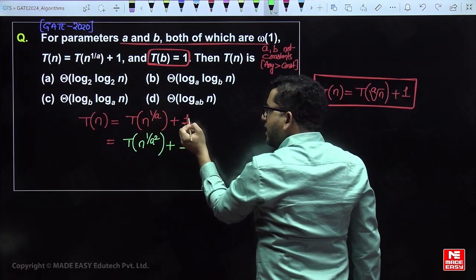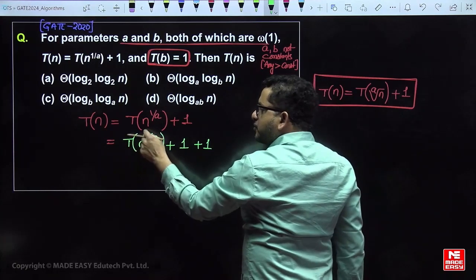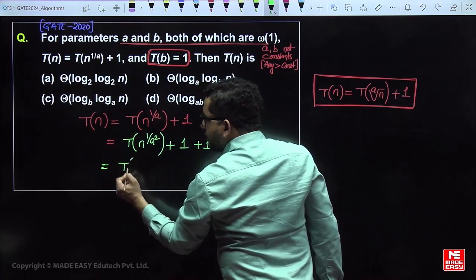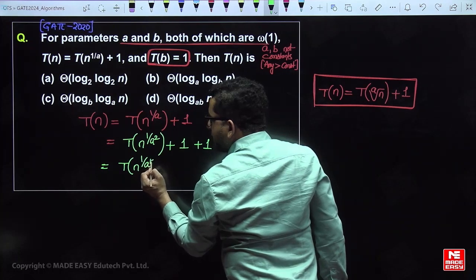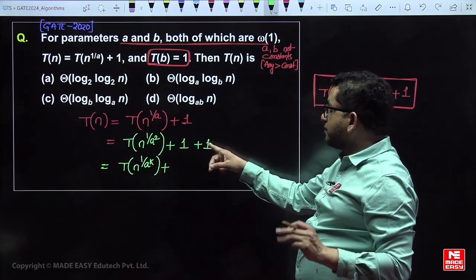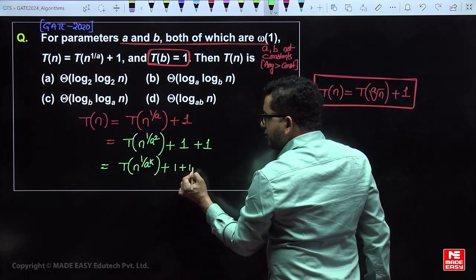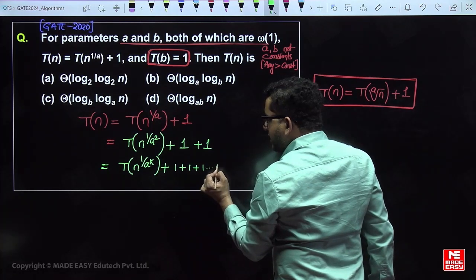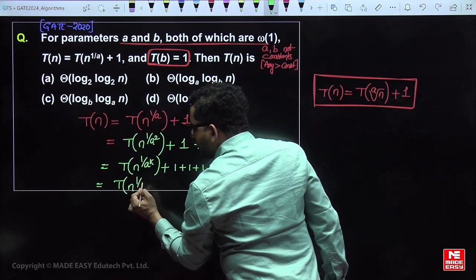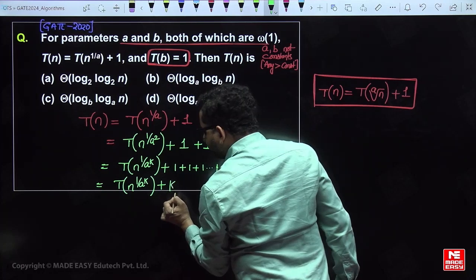After the k-th substitution, it becomes T(n^(1/a^k)) + k, since each substitution adds 1. So after k substitutions we have T(n^(1/a^k)) + k.